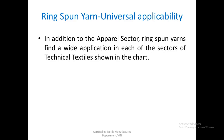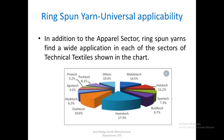Let us briefly look at the sectors in the technical textile area: automobile, industrial, sports, construction, home furnishings and textiles, medical, agriculture, protection garments, packaging, and a few others. Ring spun yarns find application in all of these sectors, whereas the new yarns are not able to compete with ring spun yarns in these sectors. So we have already seen the flexibility part and the universal applicability of ring spun yarns.